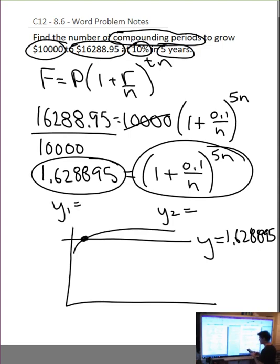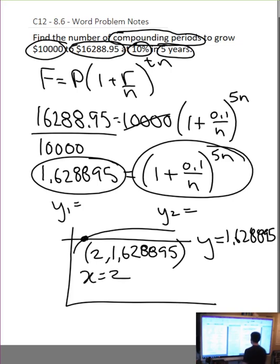I can press 2nd calc 5, enter, enter, enter, enter, and I get my intersection of 2, comma, 1.628895, obviously. Therefore, x is equal to 2. Now, I was working with n. So, n is equal to 2, meaning we're compounding semi-annually, twice a year.